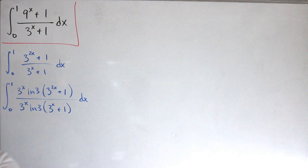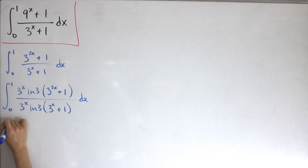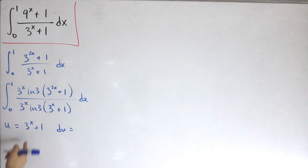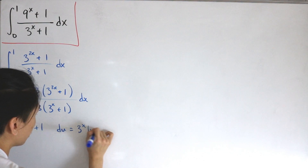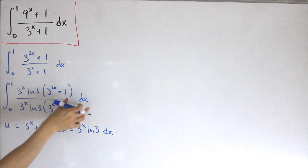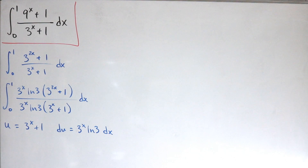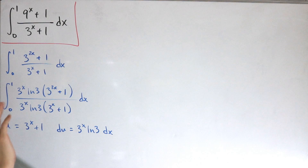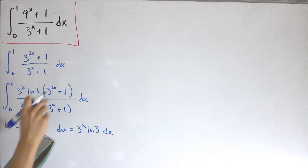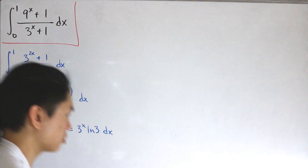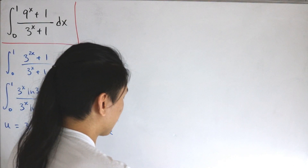We're going to do a u-substitution. Let u equal three to the power x plus one. Then du is simply the derivative of that, which is three to the power x times ln of three, dx. This will cancel one of our terms when we substitute in the new differential. We have to rewrite some things carefully — be a little bit careful so you don't mix yourself up. Let me switch to the new marker for this one.